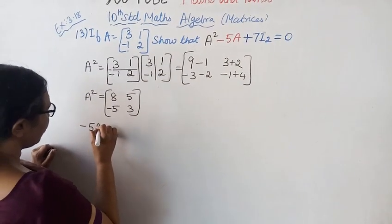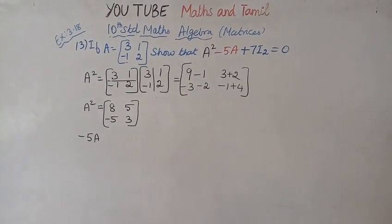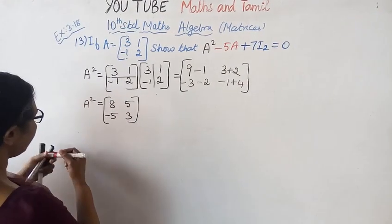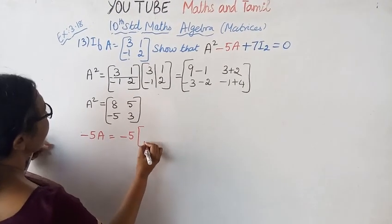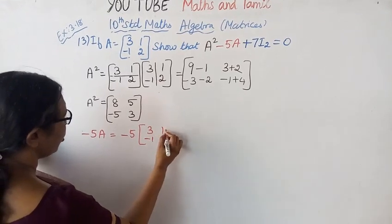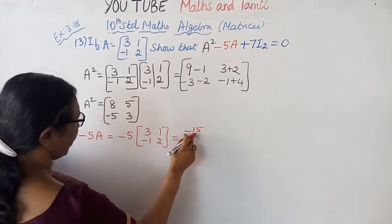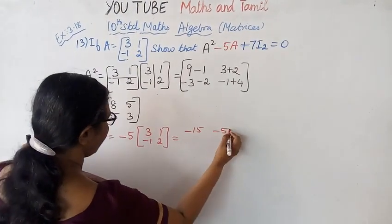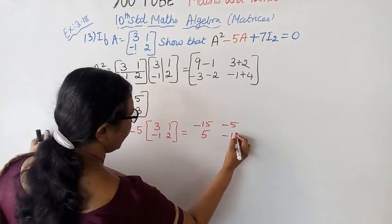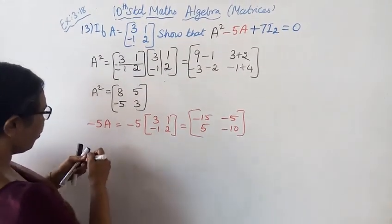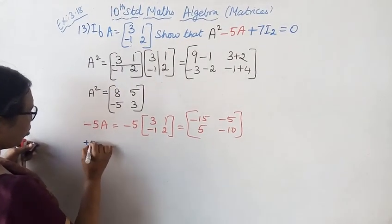Now we compute -5A. Multiply A by -5: -5 times [[3, 1], [-1, 2]]. That gives us: -5×3 = -15, -5×1 = -5, -5×(-1) = +5, -5×2 = -10. So -5A equals [[-15, -5], [5, -10]].